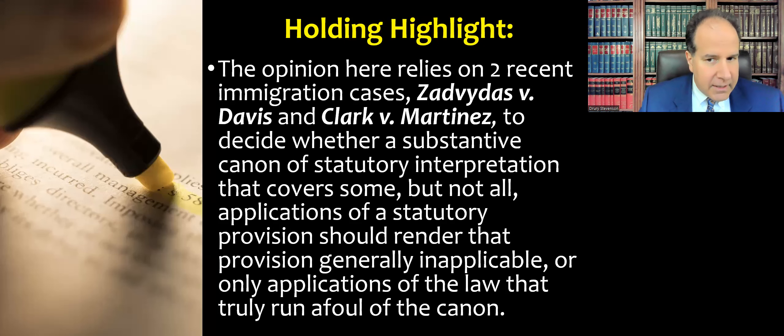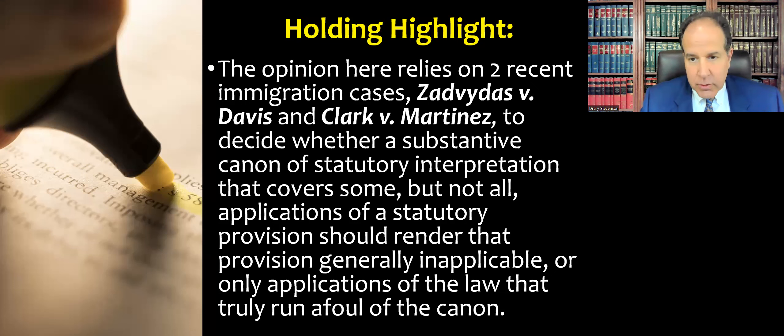The question is: if we have a statute and a canon saying the statute shouldn't apply to certain parties — like foreign ships in U.S. waters — does that make the statute entirely inoperable, or can we break it into parts? The answer here is that the statute applies to certain applications, like docking, boarding, and disembarking, but not when it would affect internal operations of the ship. That's the interesting part from the standpoint of statutory interpretation: a canon can rule out certain as-applied uses of a statutory provision while leaving others in place. That concludes our discussion of Spectre versus Norwegian Cruise Lines.